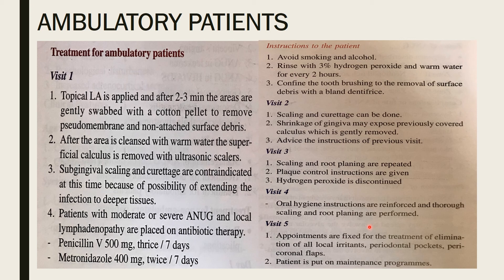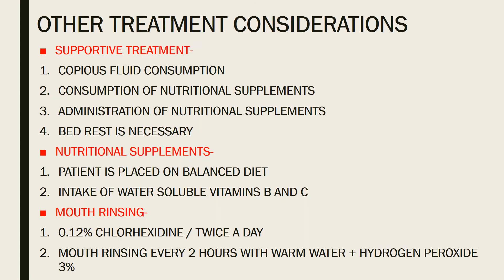Visit 5 involves appointments for elimination of all local irritants, periodontal pockets, and pericoronal flaps; the patient is then placed on a maintenance program. This is the treatment for ambulatory patients, and also for non-ambulatory patients after the initial three-day protocol.